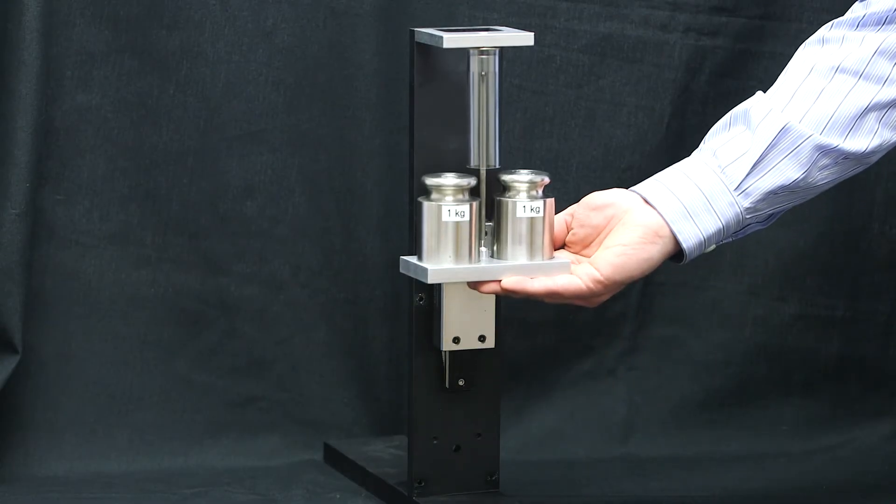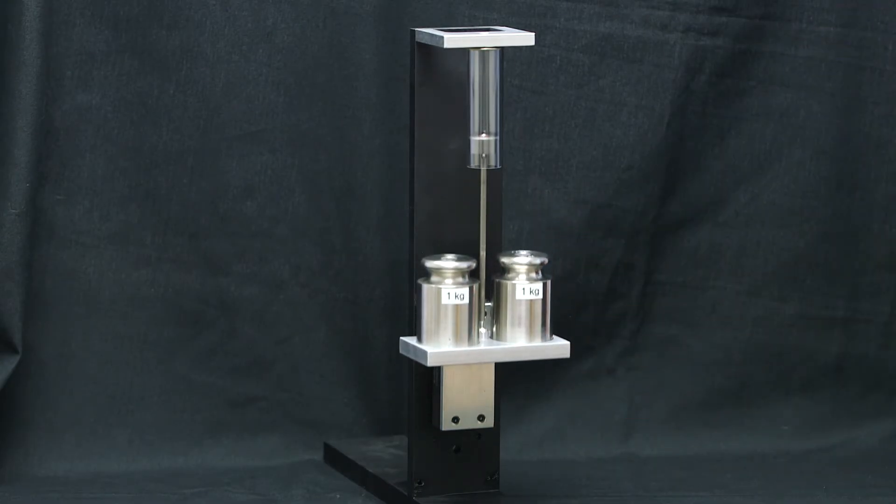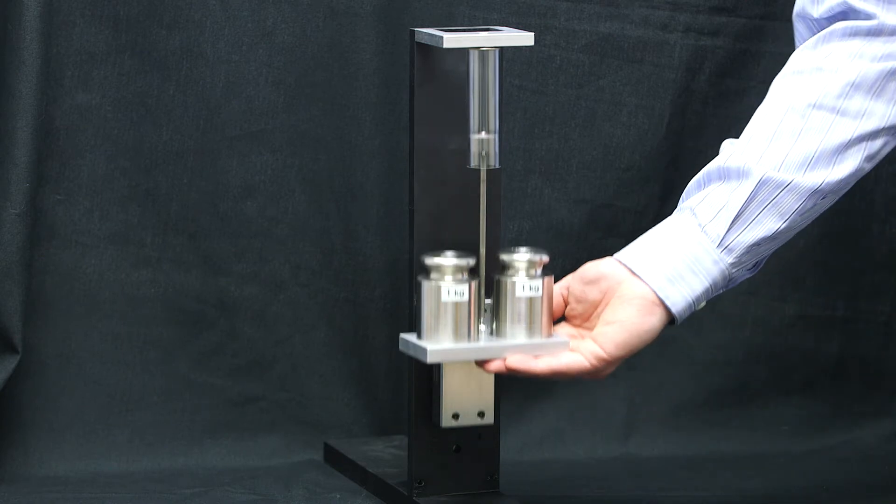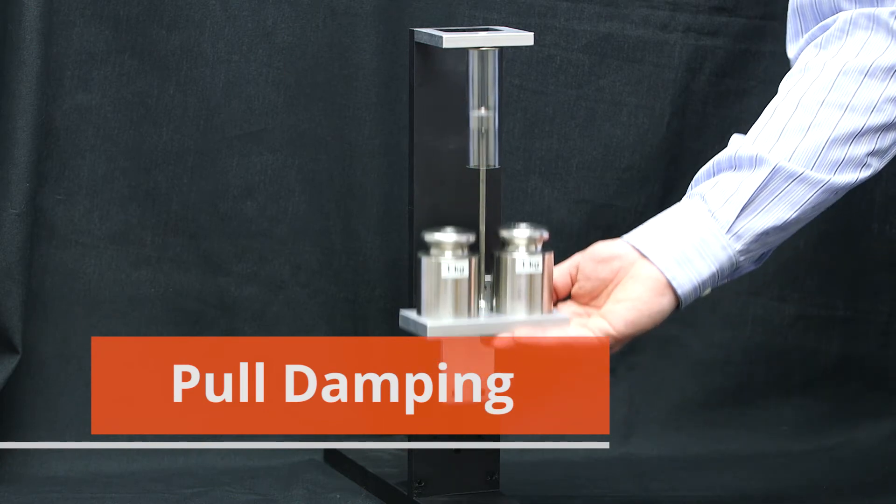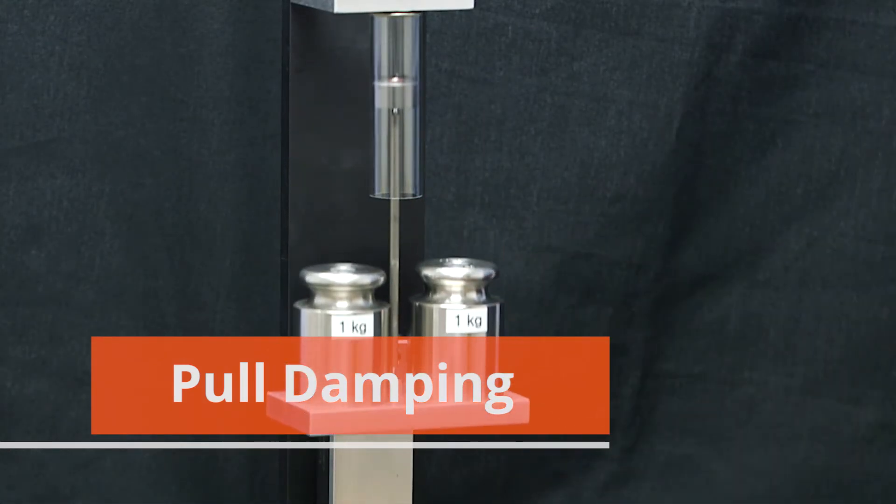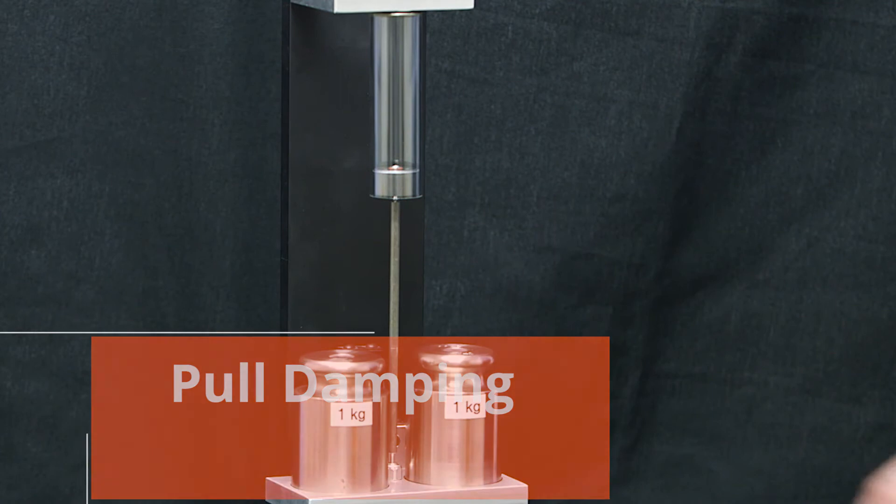AirPots work differently depending on whether you push or pull on the rod. Here, we've mounted a model 240 dashpot in a demonstrator so you can see how it works in the pull direction. The dashpot controls the fall of this two kilogram mass.